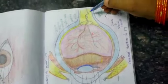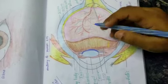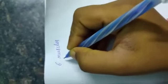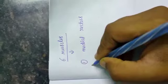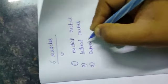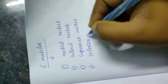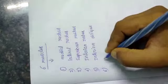The eye consists of six muscles. First is medial rectus, second is lateral rectus, third is superior rectus, fourth is inferior rectus, fifth is inferior oblique, and sixth is superior oblique.